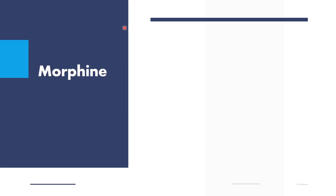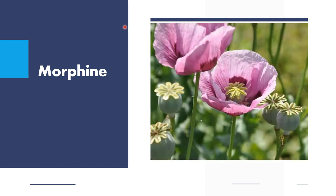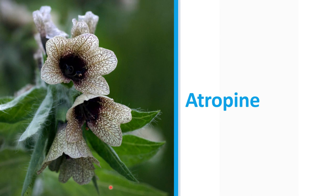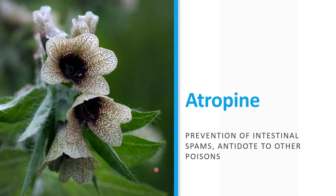The first example is morphine, an alkaloid derived from Papaver somniferum, or the opium poppy, known as an analgesic used to relieve pain. Another important alkaloid is atropine, derived from Hyoscyamus niger, commonly known as the stinking nightshade. It can be used for the prevention of intestinal spasms as well as an antidote to other poisons.